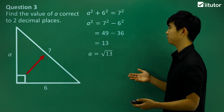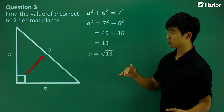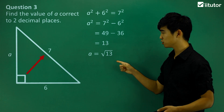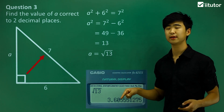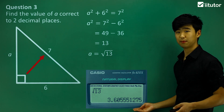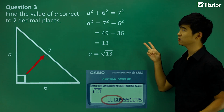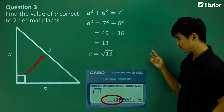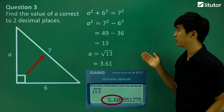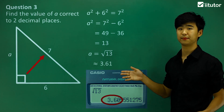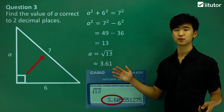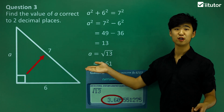So a must be the square root of 13. As opposed to the last question, we want the answer correct to two decimal places, so put the square root of 13 into a calculator. We get a long decimal number and we need to round it to two decimal places. Looking at the digits, the answer is approximately 3.61 — the squiggly line means approximately equal to. So 3.61 is the answer for question number 3.